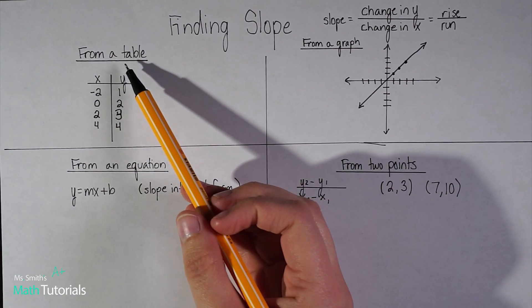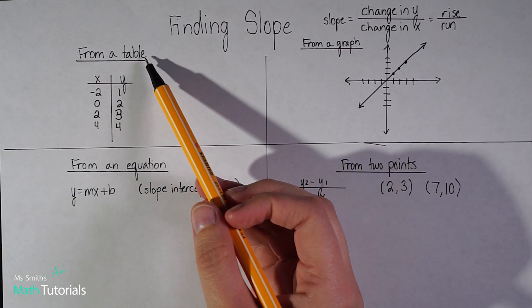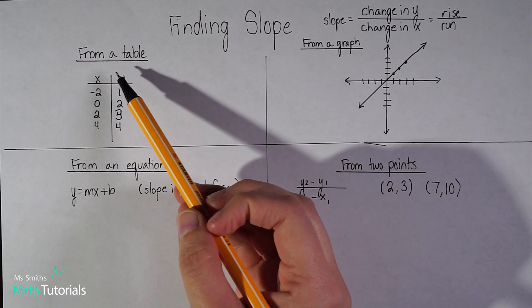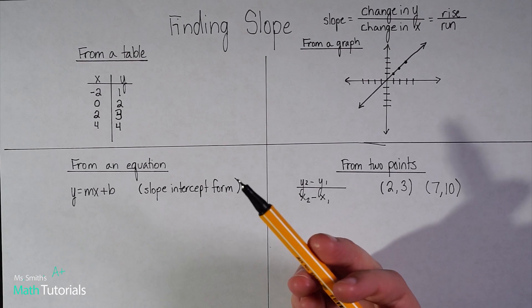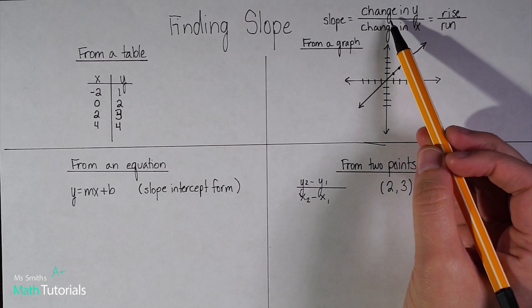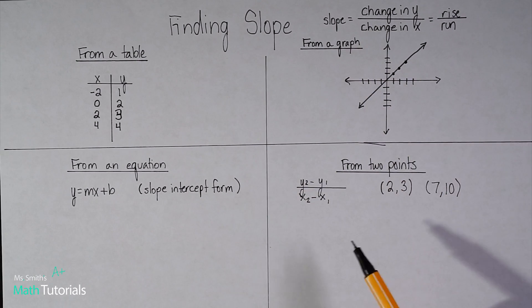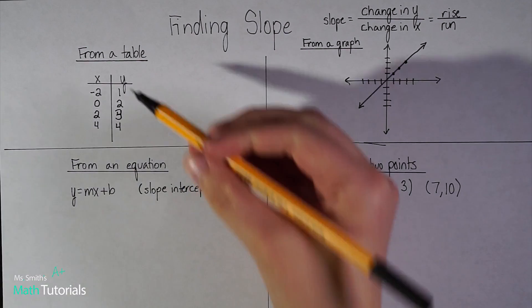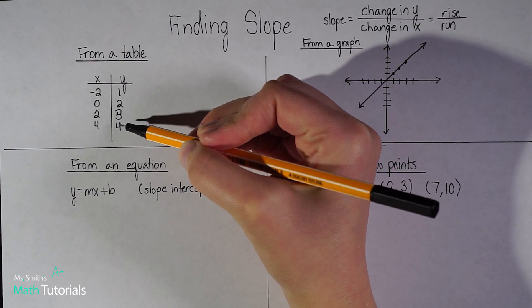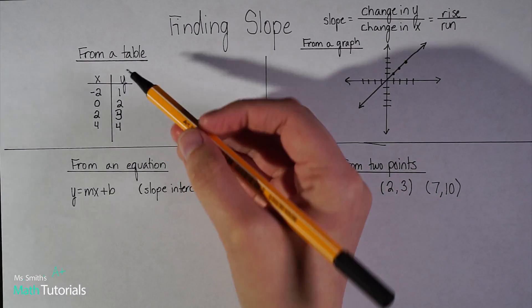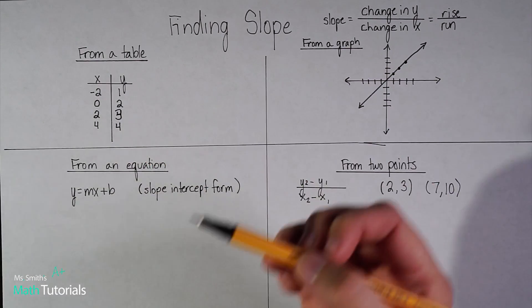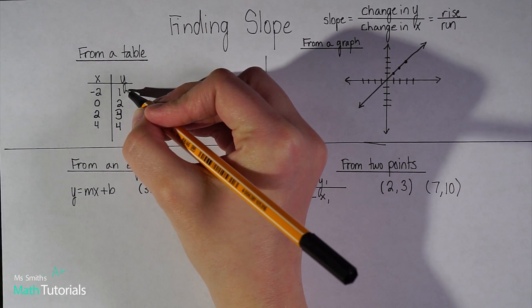The first way we could find slope would be from a table. So they might give you an xy table similar to this one. And they would expect you to find the change in y over the change in x. So the best place to start, I think, will be the y because that's what I'm going to put up top. So I want to look at my y column and let's find my change in y. So let's find like what is the pattern? How is it increasing or decreasing each time?